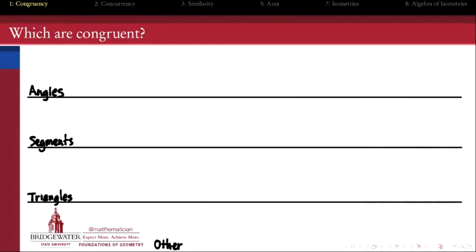Because we study a lot of different types of geometric objects in geometry, we'll have correspondingly a variety of different criteria for what it means for those objects to be congruent. So let's look at some examples.